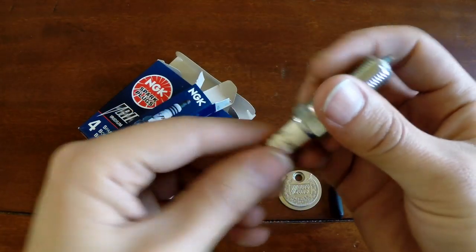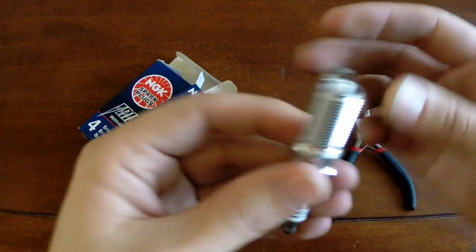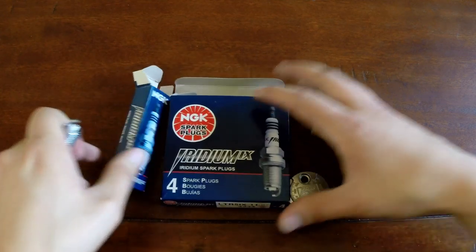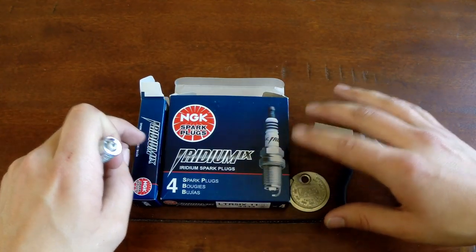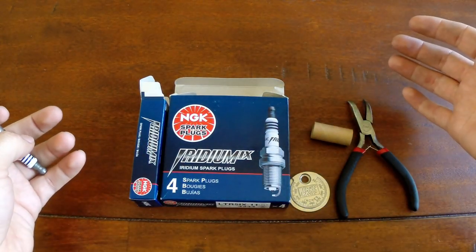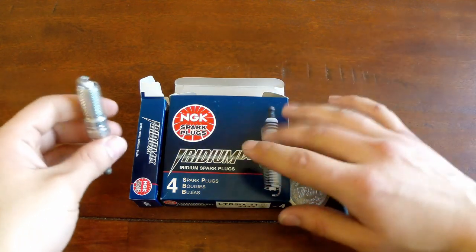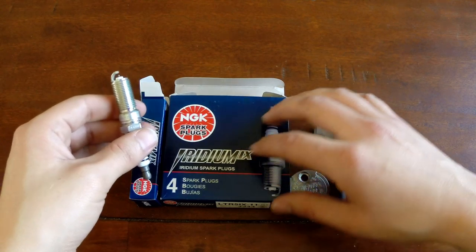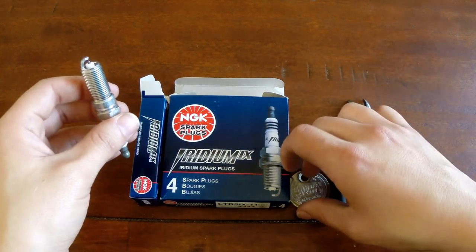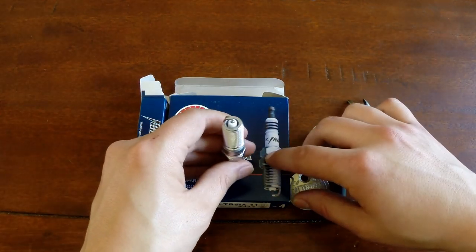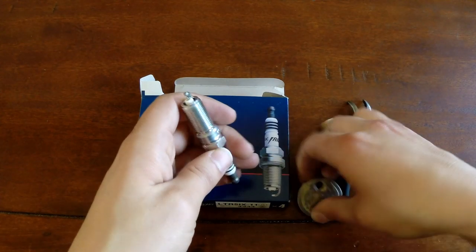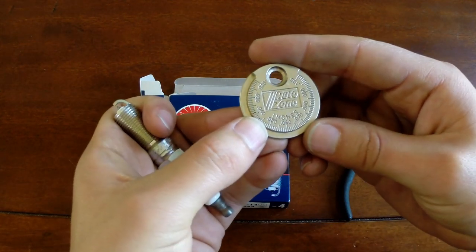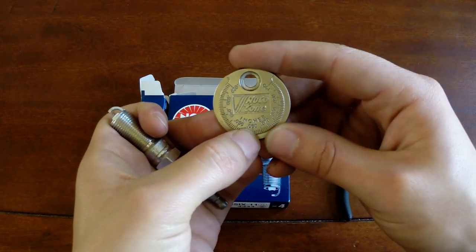Other than that, plug looks perfect as it should be. These plugs do come pre-gapped from the NGK factory but in my experience, they've generally been off a little bit so I always gap them myself. We are installing these on a Mazda 3 so that calls for a .045 gap, so that's .045 inches.